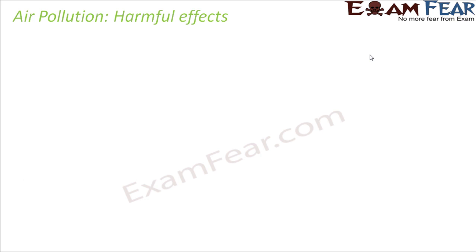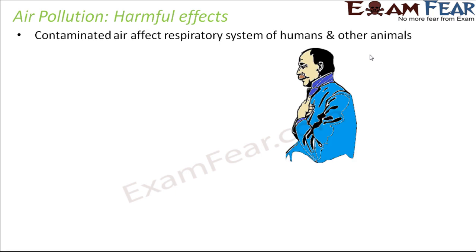So now let us look at the harmful effects of air pollution. Why is pollution so deadly? Why are we so scared of it? Contaminated air affects the respiratory system of humans and other animals. When we breathe the air present in our surroundings, if that air is contaminated, it is very easy for those undesirable substances to get inside our body. Through the nasal passage, it directly gets into our lungs, affecting our respiratory system. So that is the first harmful effect.